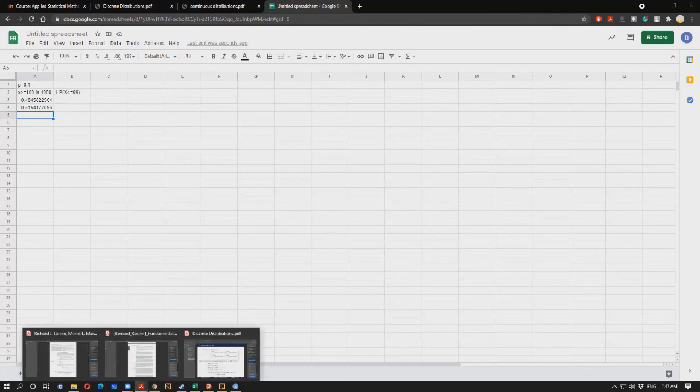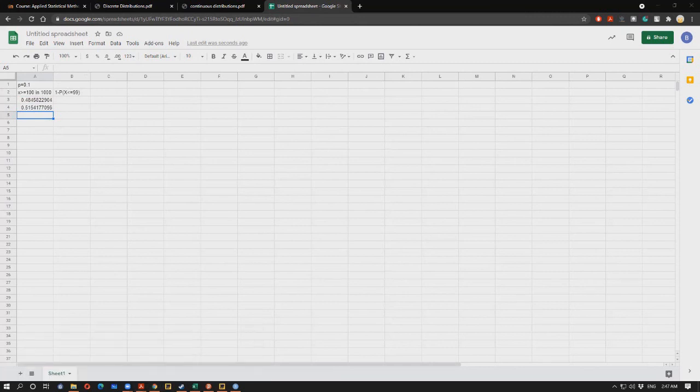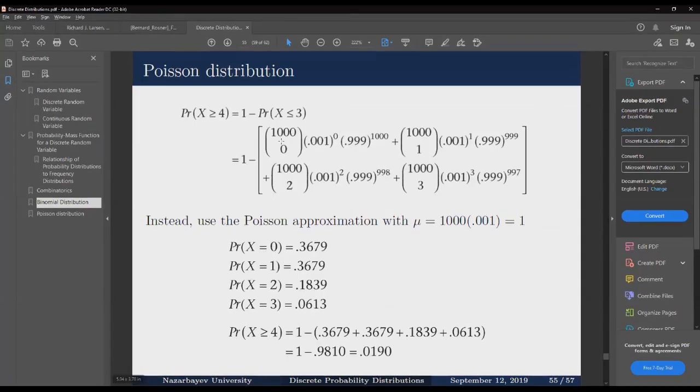So similarly, let's come back to our problem here. We should be looking for probability that our random variable x is greater than or equal to 4, which is 1 minus probability x is less than or equal to 3. Then we have to calculate this huge thing, and we know that calculating this might get difficult. So we would rather use Poisson distribution and calculate e to the power of minus lambda rather than calculating those huge binomial coefficients.